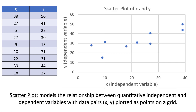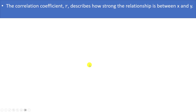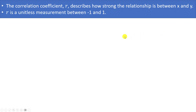Now we would like to quantify how strong the relationship is between our x and y variables — meaning how well a straight line would fit the dots on a scatter plot. To do this, we use a value called the correlation coefficient, typically represented by the lowercase letter r. The best way to understand the correlation coefficient is to look at a number of examples.